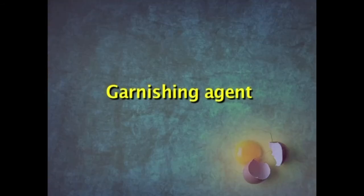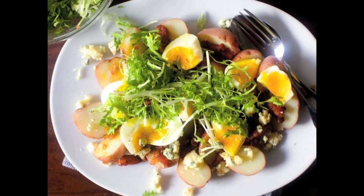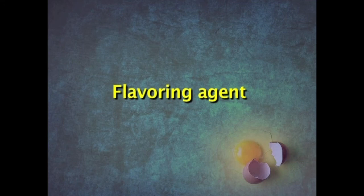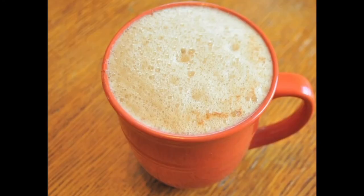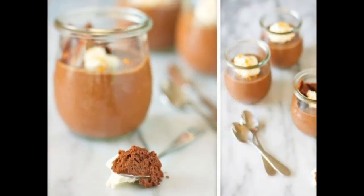Egg is also used as a garnishing agent - boiled eggs are sliced into half and used for decoration, for example in biryani and a variety of other preparations. Egg is also used as a flavoring agent. It gives flavor to custards, puddings, etc. It has a very unique flavor, so when egg yolk is beaten along with milk and vanilla essence, it gives a unique flavor to the product.